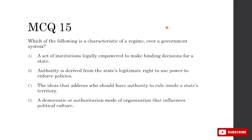Which is a characteristic of a regime over a government? A — a set of institutions legally empowered to make binding decisions: that's a government. B — authority derived from the state's legitimate right to use power: also a government. C — ideas about who should have authority to rule: government. D — a democratic or authoritarian mode of organization that influences political culture: that is a regime. A regime is either democratic or authoritarian and it influences political culture. So D is correct.